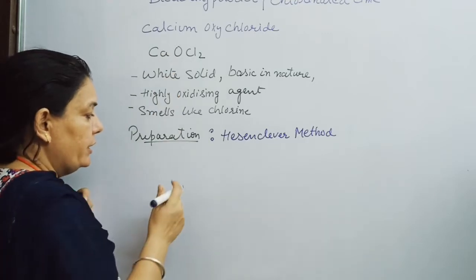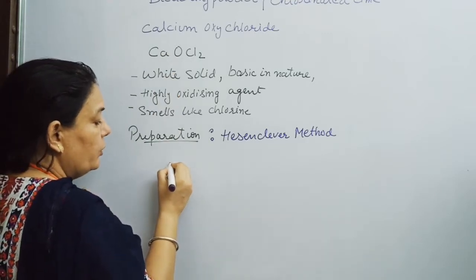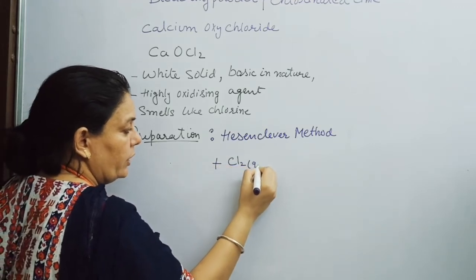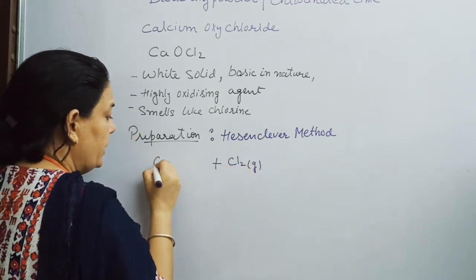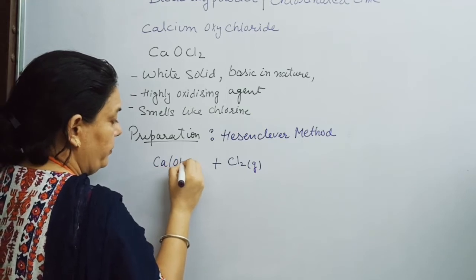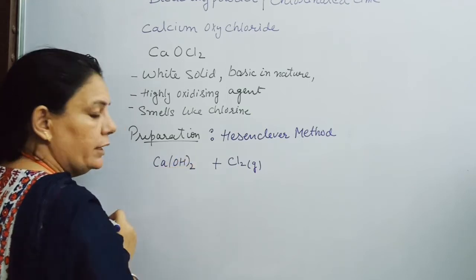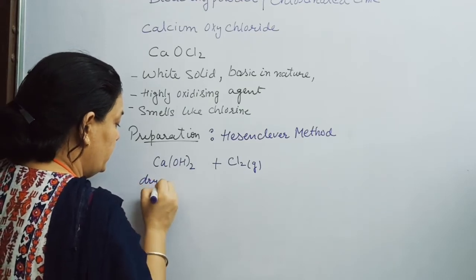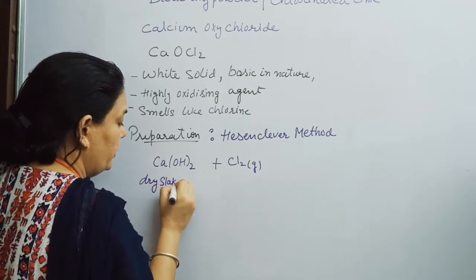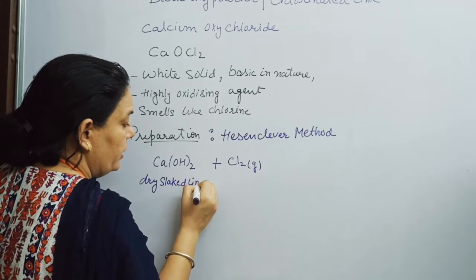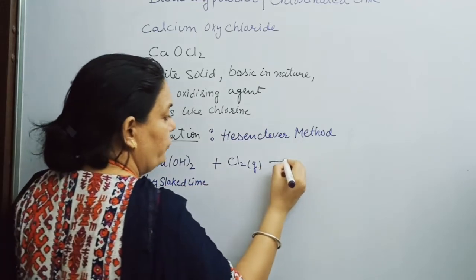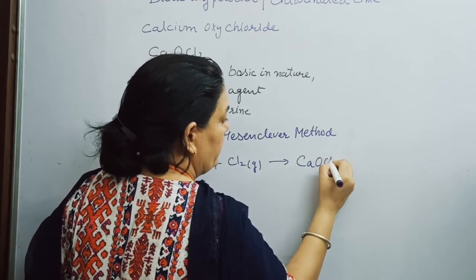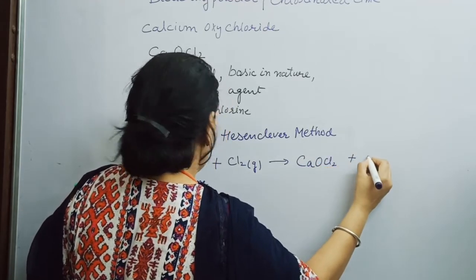Let us write the balanced equation. When Cl2 gas is passed through dry slaked lime — whose formula is Calcium Hydroxide, Ca(OH)2 — there is formation of Calcium Oxychloride, CaOCl2, plus water.